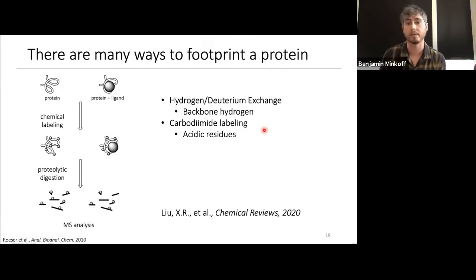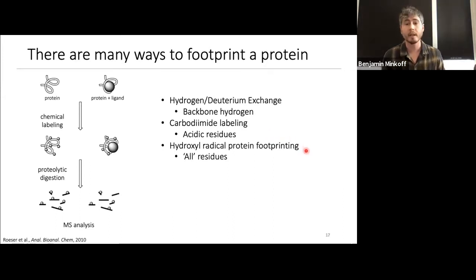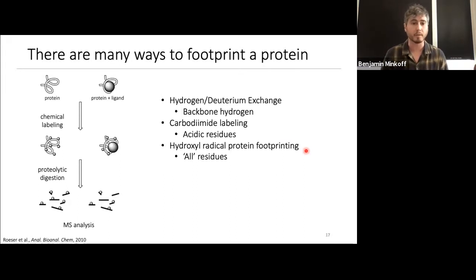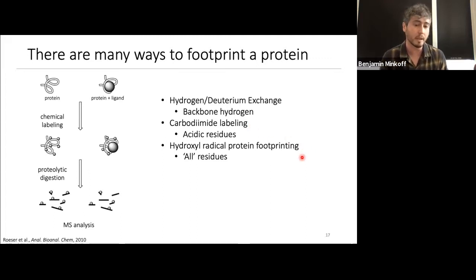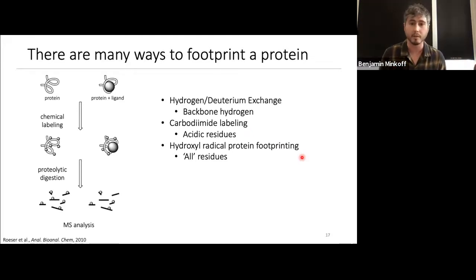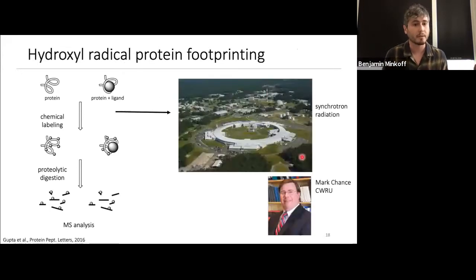The technique we ultimately settled on was hydroxyl radical protein footprinting, which we thought bridged the two other techniques nicely. Hydroxyl radicals covalently modify amino acid side chains, and in theory they react with all residues — though in practice the most reactive subset includes methionine and aromatics. Nonetheless, you get specificity for more residues than just a single chemical group. When we decided to do structural mass spec, we picked hydroxyl radical footprinting, and at that time there were two ways to do it.